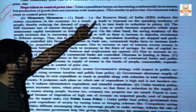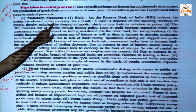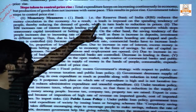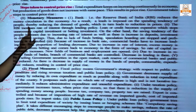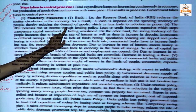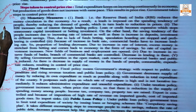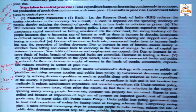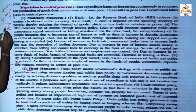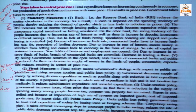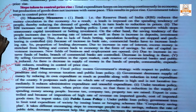First, the Reserve Bank of India reduces money circulation in the economy. As a result, a check is imposed on the spending tendency of people, thereby reducing the demand for goods, which in turn leads to a reduction in price. For example, RBI uses tools like CRR — Cash Reserve Ratio, currently 4% — and SLR — Statutory Liquidity Ratio, currently 18%.